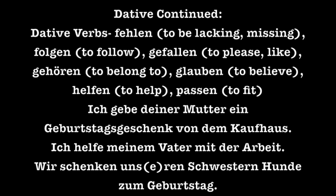Here are some examples using the dative case. Ich gebe deiner Mutter ein Geburtstagsgeschenk von dem Kaufhaus. In this sentence, ich is the subject — I am giving. What am I giving is the direct object, ein Geburtstagsgeschenk, a birthday gift. To whom I am giving the birthday gift is your mother, deiner Mutter, and von dem Kaufhaus is a dative prepositional phrase. Von, being a dative preposition, takes dem Kaufhaus instead of das Kaufhaus.